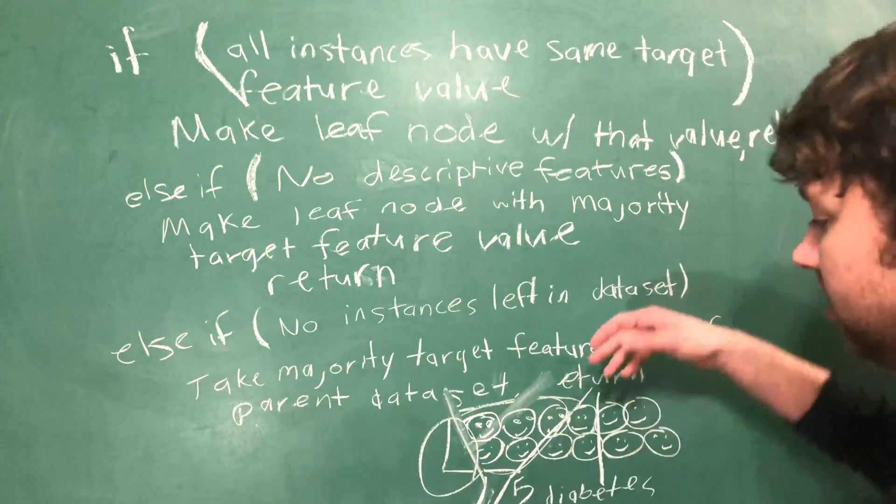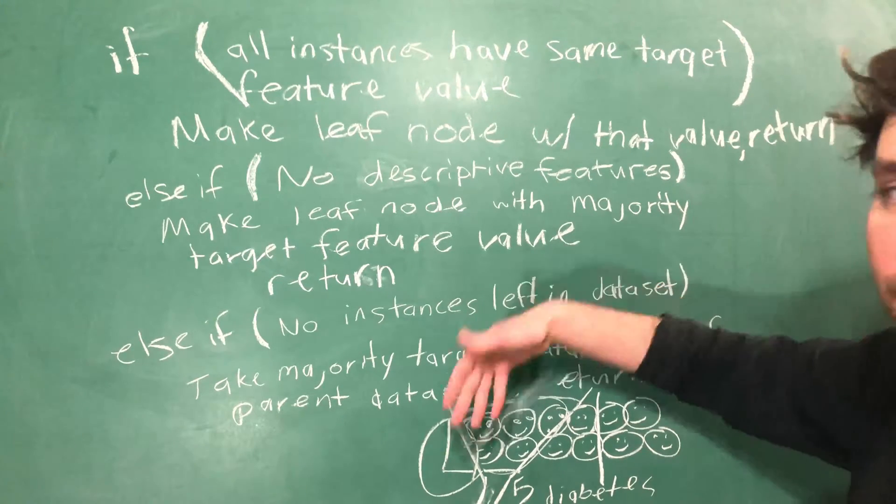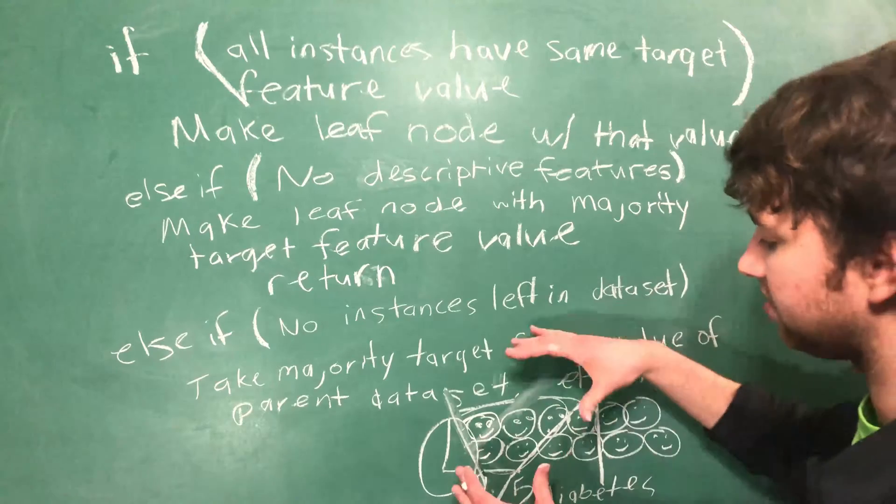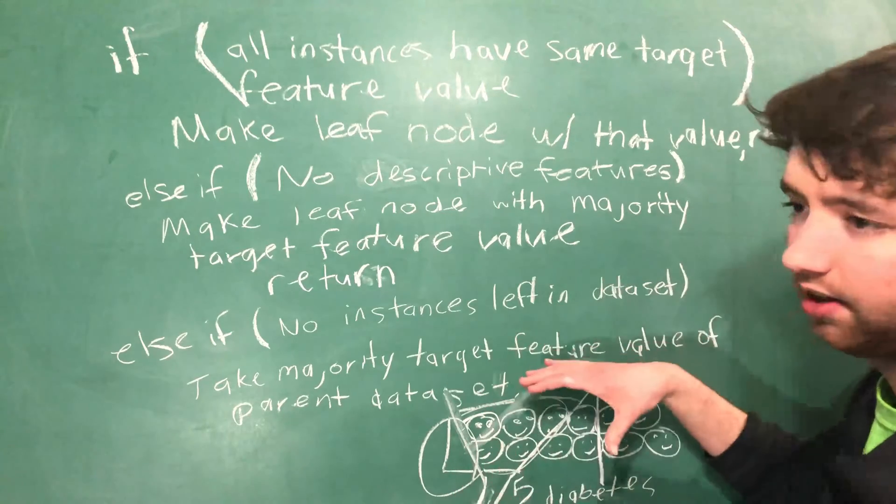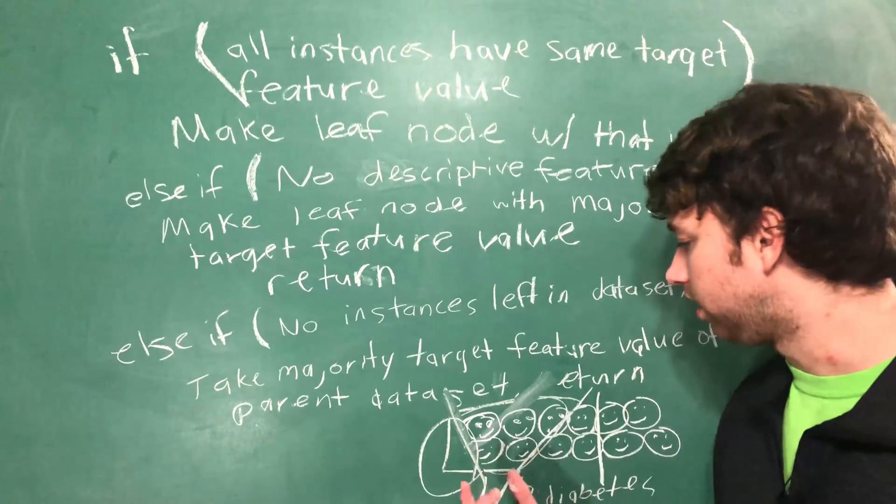Because if you get to this point, the chances are you're not going to have diabetes, because in this parent set only one out of the five have diabetes.